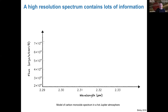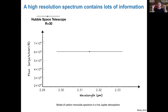A high resolution spectrum contains lots of information. Most exoplanet spectra we have — for transiting exoplanets from the Hubble Space Telescope — have a resolution of about 30 by the time we've binned the spectrum down into useful data points. If I plot that on a small wavelength region in the K-band where we expect to see carbon monoxide, we'd actually only see about one data point.